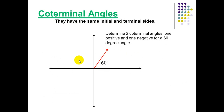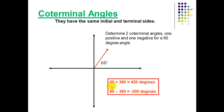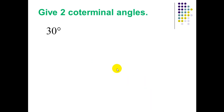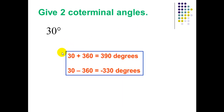Determine two coterminal angles, one positive and one negative, for 60°. We start from the initial side and rotate. By adding or subtracting one revolution, we get the equivalent angle to 60°. Using the formula: 60 plus 360 or 60 minus 360 — that is, 60 plus one revolution or 60 minus one revolution. So the positive coterminal angle is 420° and the negative coterminal angle is negative 300°.